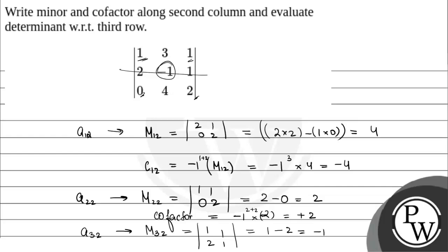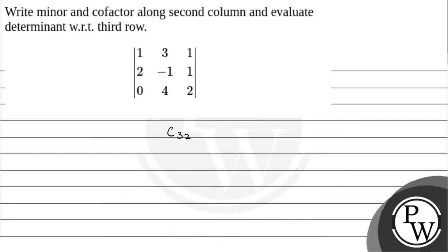For the cofactor C₃₂, we have minus 1 to the power 3 plus 2, which is 5. So this becomes minus 1 times minus 1, giving us plus 1. Now for the third row, we use these values.